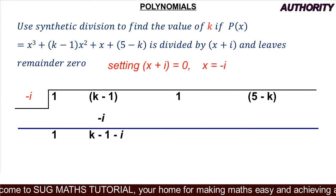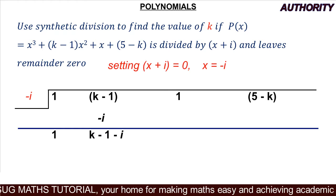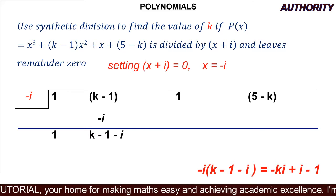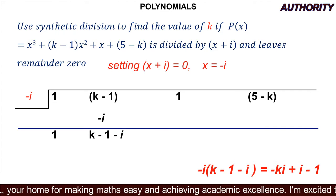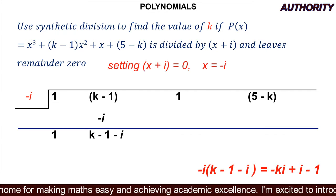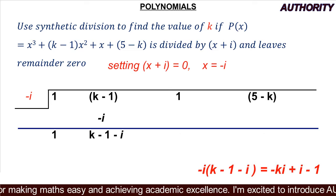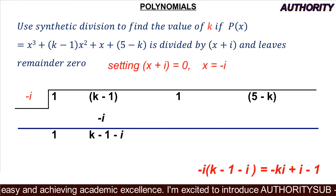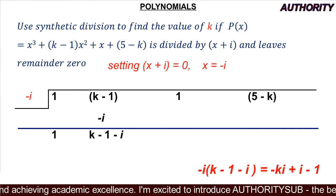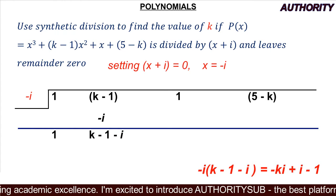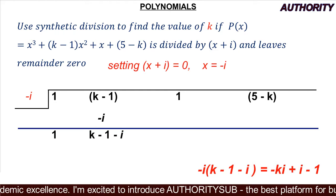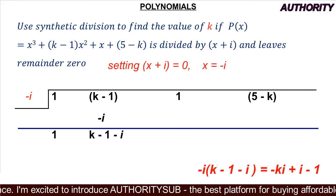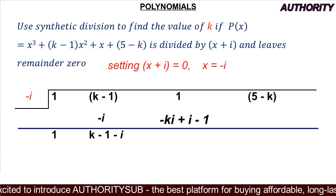Now we take (k − 1 − i) and multiply by −i. We get: (−i)(k) = −ki, (−i)(−1) = +i, and (−i)(−i) = i² = −1. So (−i)(k − 1 − i) = −ki + i − 1.